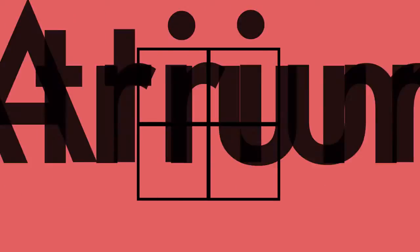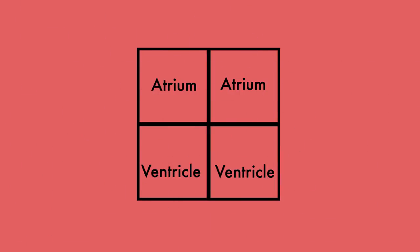The heart is composed of four chambers and it might be helpful thinking of them as four boxes, like you see here in this schematic. Of these four chambers there are two atria and two ventricles. In a normal heart, the atria always pump blood to the ventricles and the ventricles pump blood into arteries, moving blood away from the heart.